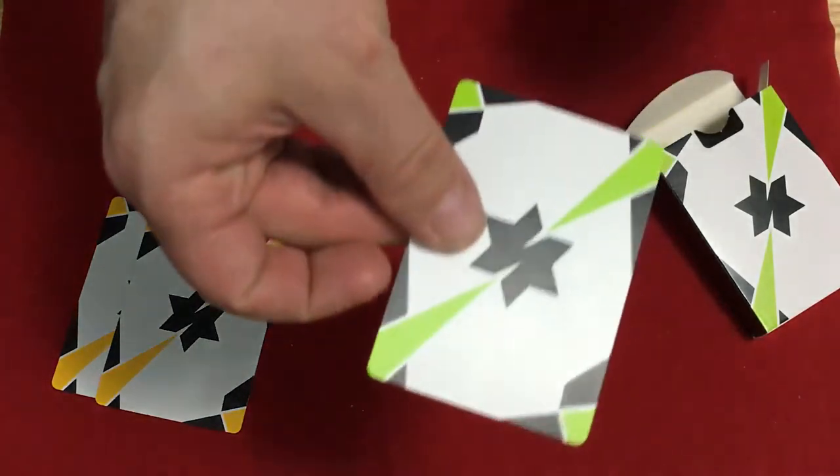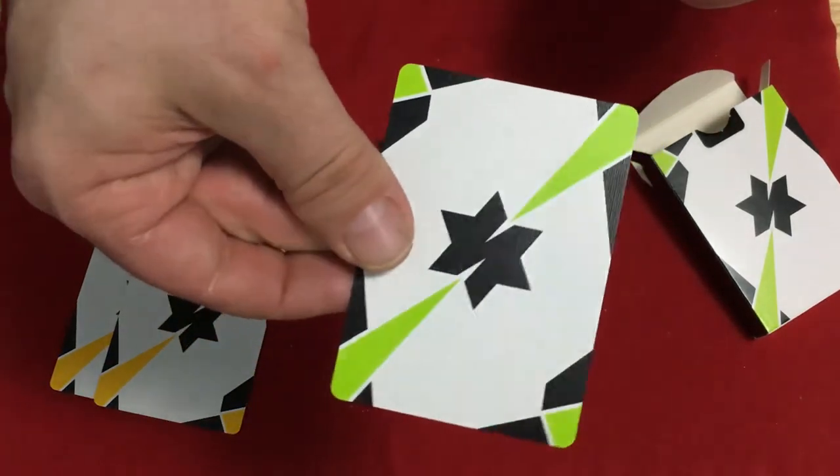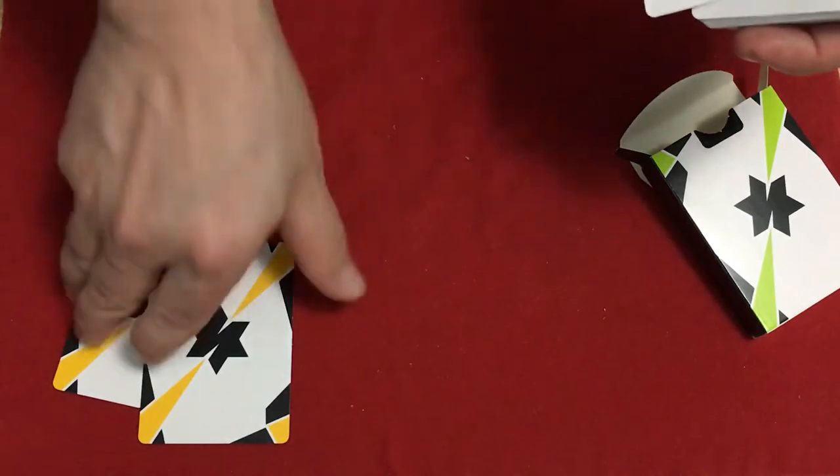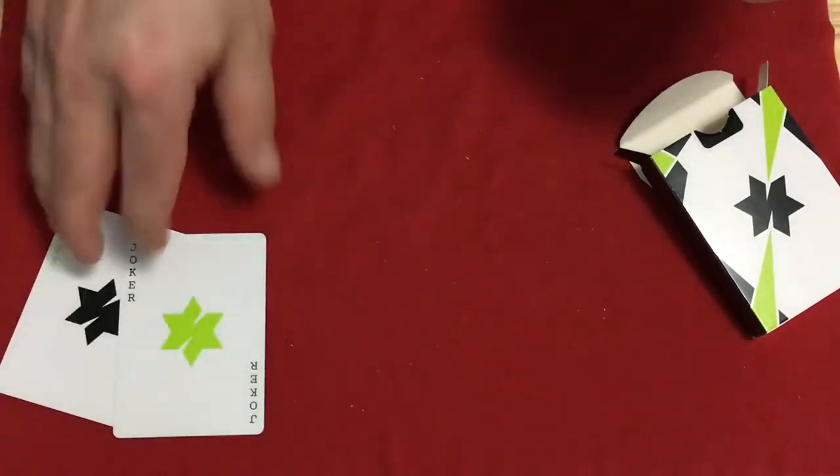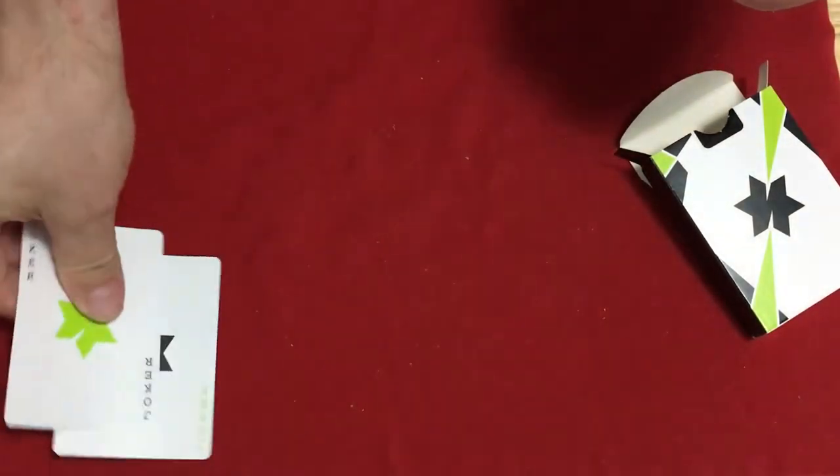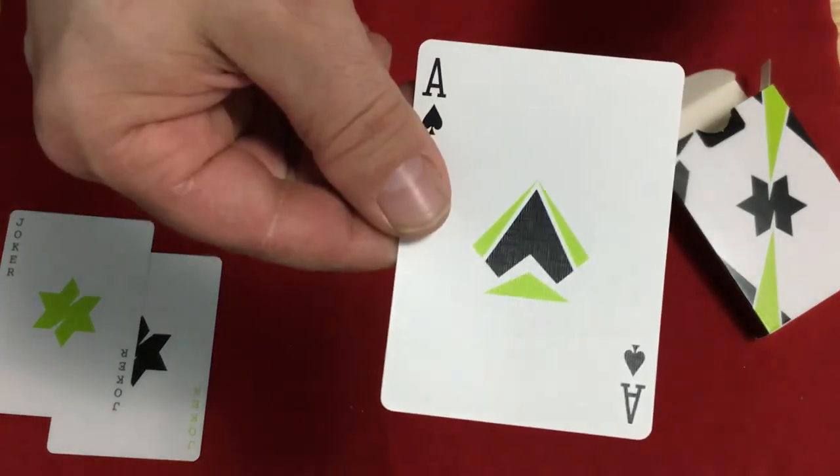Which is interesting because the actual back design is in this green color. So the Jokers are kind of strange because they have a different color back design for color changes and gimmicks. The Ace of Spades looks like that. Not bad.